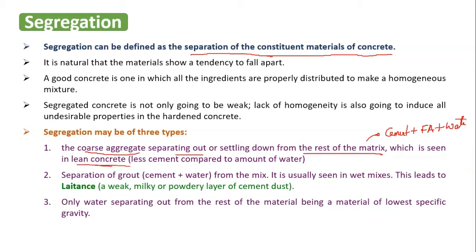Lean concrete is a concrete in which cement is less compared to the amount of water — in other words, a high water-to-cement ratio is adopted. So concrete in which the water-to-cement ratio is very high is called lean concrete, and in such a case this first type of segregation is going to happen.